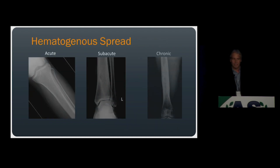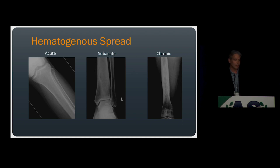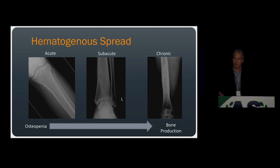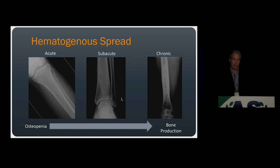Let's move on to hematogenous spread of osteomyelitis. Just like direct spread, it can be considered as a spectrum or evolution of your body's response to infection — early on, the hallmark is bone demineralization, more commonly osteopenia, and less commonly erosions. Later on, you're going to get bony production: sclerosis, cortical thickening, and periosteal reaction. However, in distinction to direct spread, hematogenous osteomyelitis is much more prone to developing intraosseous abscesses, and you'll often see a mixed lytic and sclerotic appearance.